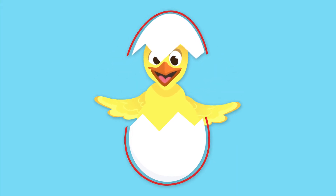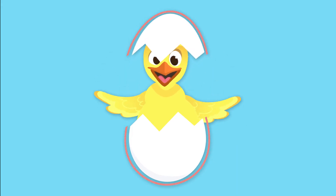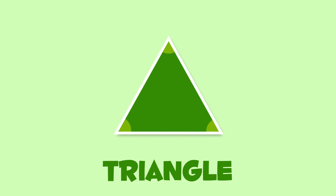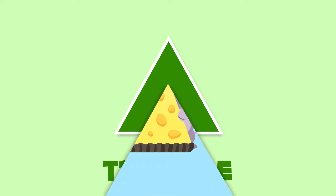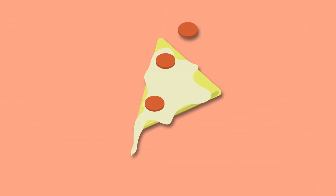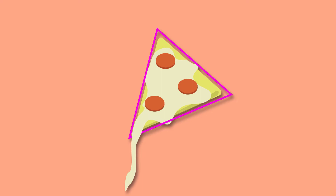This is not an oval anymore. This is a triangle. It's a polygon with three sides and three angles. The triangle is like this piece of cheese, or like this slice of pizza. Yum yum! It looks delicious!